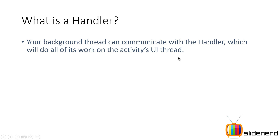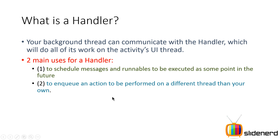Your background thread can communicate with the Handler, which will do all the work on the activity's UI thread. For example, if you want to update the progress bar from the background thread, you get the Handler belonging to the main thread and simply send a message updating the progress bar. The two uses for a Handler are: one, to send messages and runnables, and two, to send some action to be performed in a different thread other than your own.